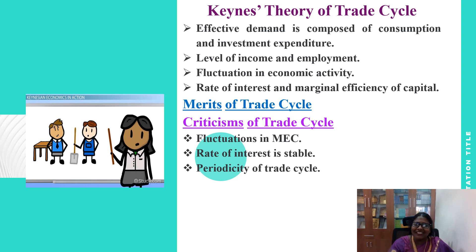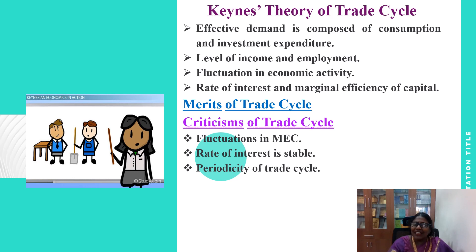Finally, I would like to address the criticisms of Keynes' theory. Firstly, according to Keynes, the main cause of the trade cycle is fluctuations in marginal efficiency of capital. But the term marginal efficiency of capital is vague. It depends on the expectations of the entrepreneur about the future. In this sense, it is similar to Pigou's psychological theory. Keynes has ignored real factors.